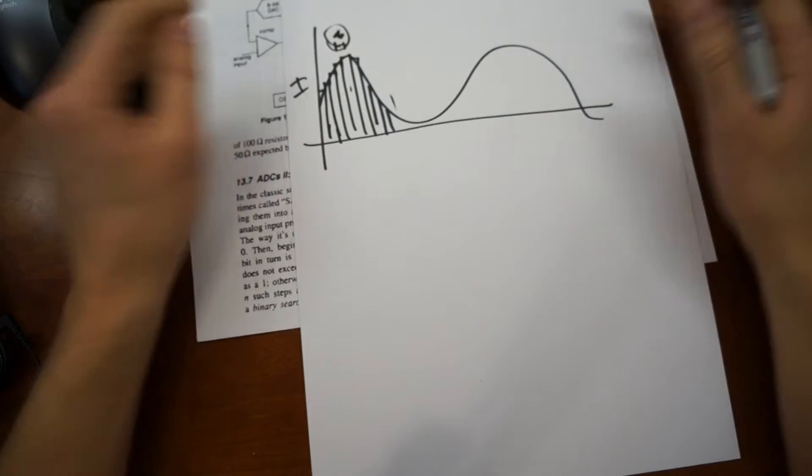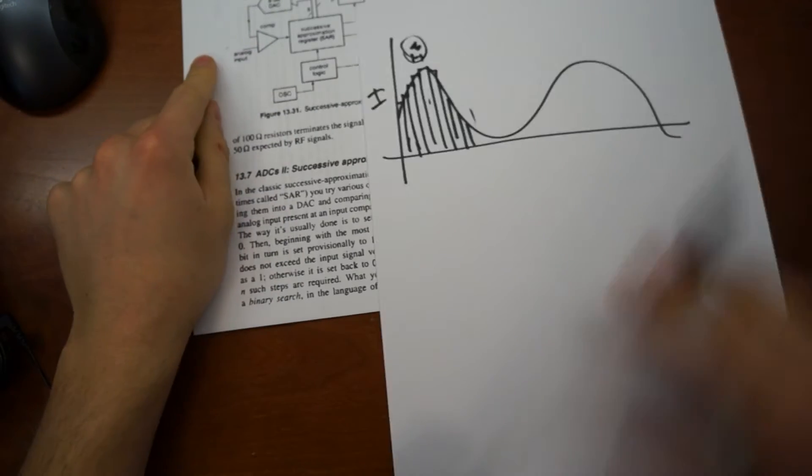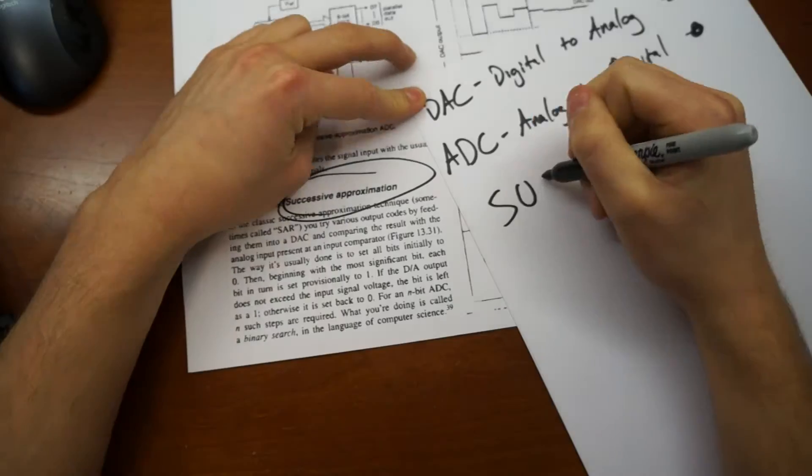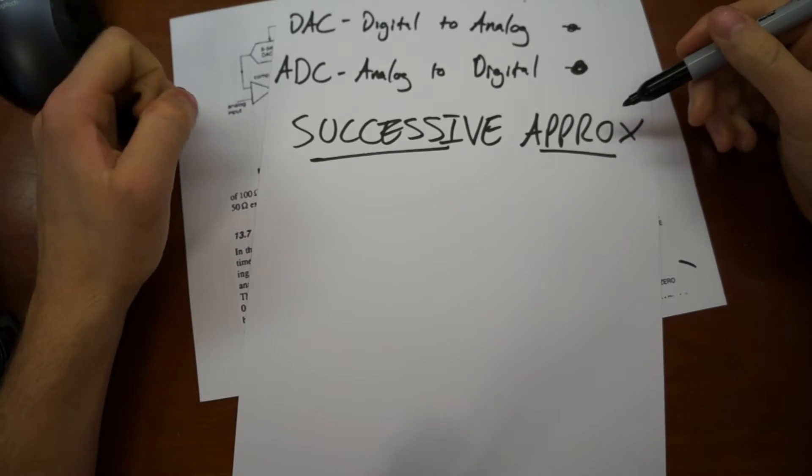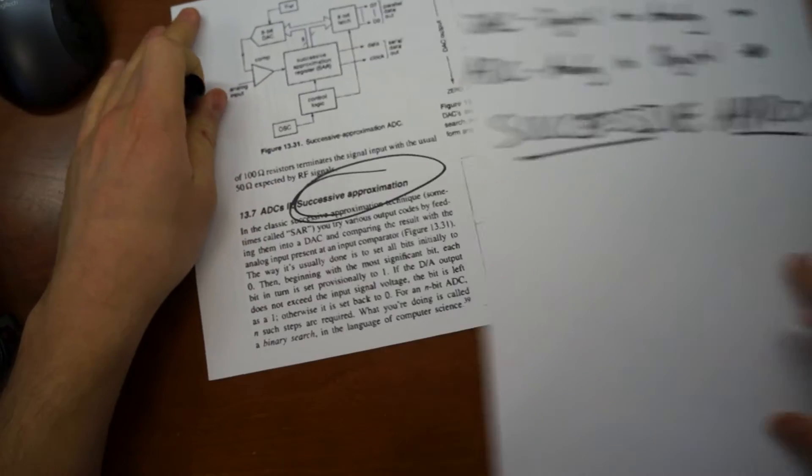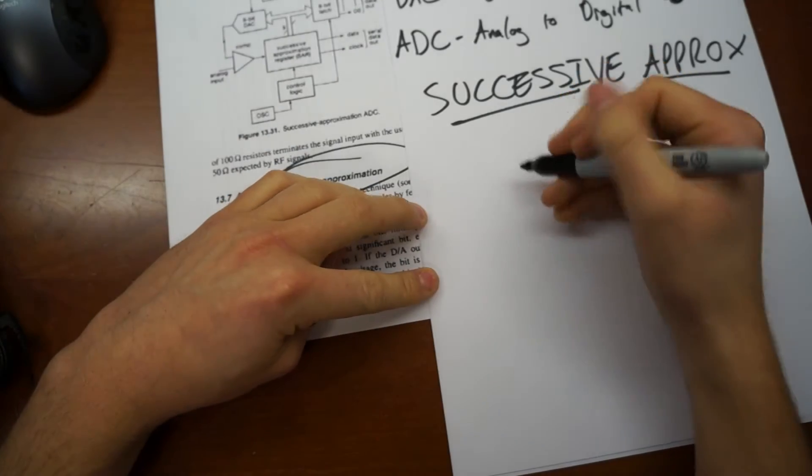So there's multiple methods of doing this. One is called the successive approximation. The successive approximation method for analog to digital conversion.